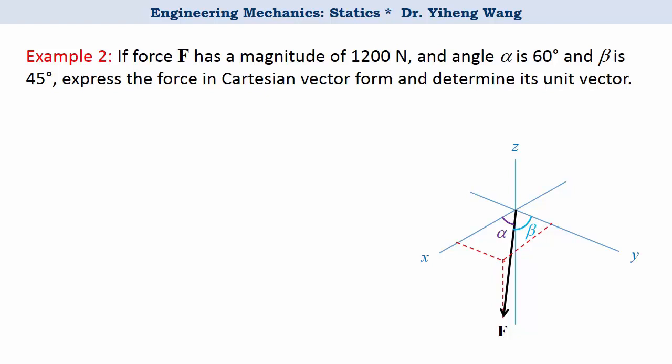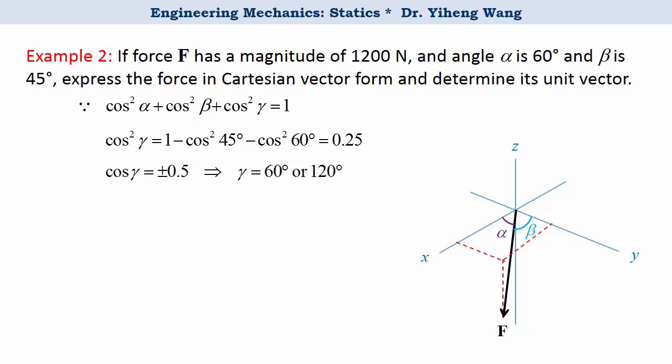Since we know that for any Cartesian vector, its three direction angles alpha, beta, and gamma are related by this equation. Therefore we can try to solve for gamma. Cosine gamma squared equals 0.25, and cosine gamma has two possible values, positive or negative 0.5, which means that gamma can be either 60 degrees or 120 degrees.